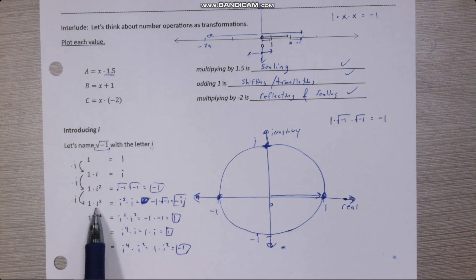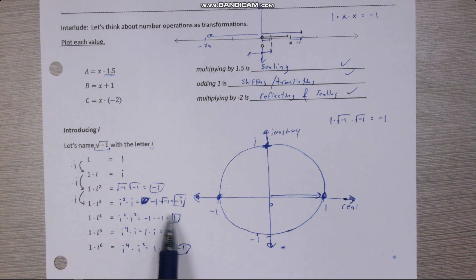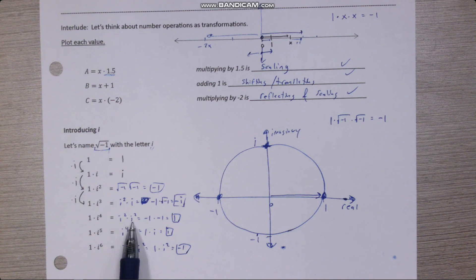Okay, so i cubed is like i squared times i. i squared we already know is negative one, so negative one times i is just negative i. i to the fourth is like i squared times i squared. I know each i squared is negative one, so negative one times negative one is one.